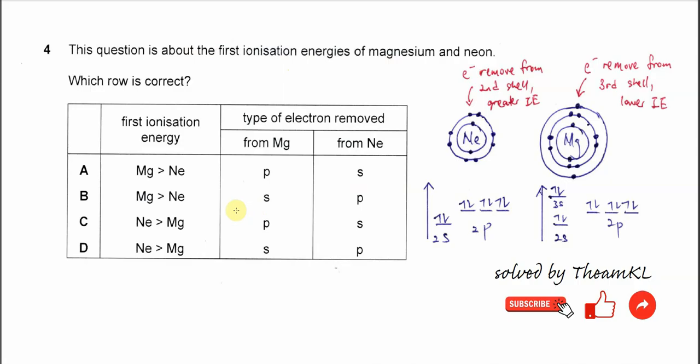Before we choose the answer, let's look at the neon and magnesium. So neon has two electron shells and magnesium has three electron shells.